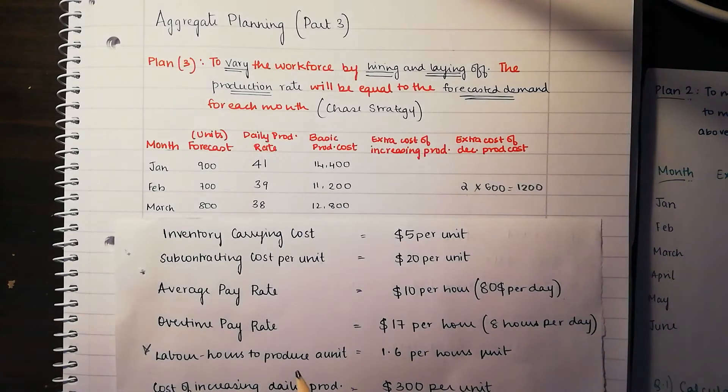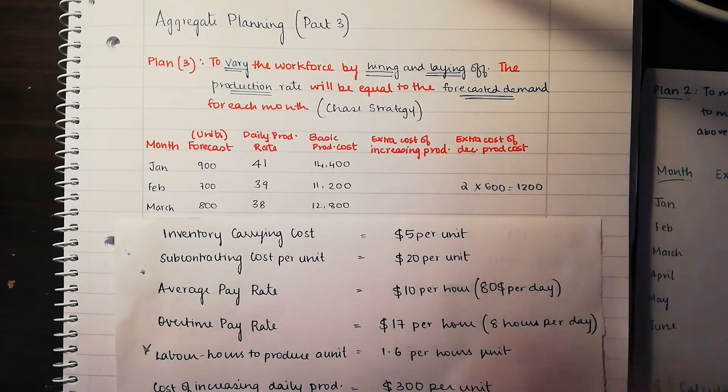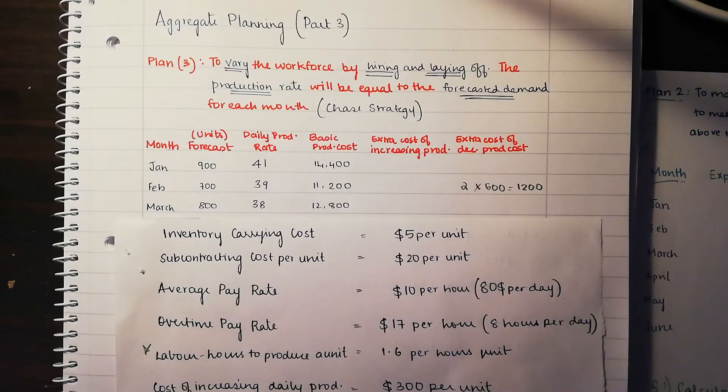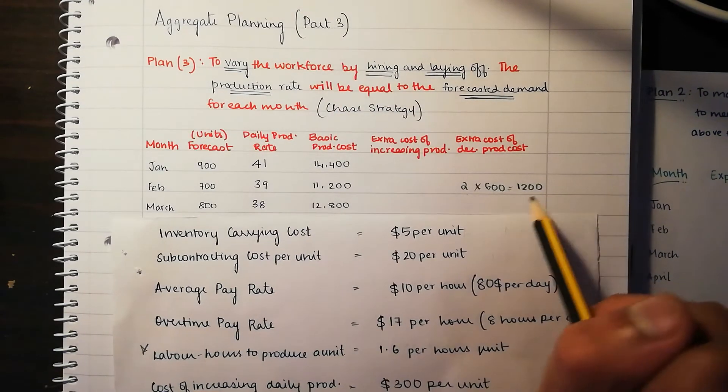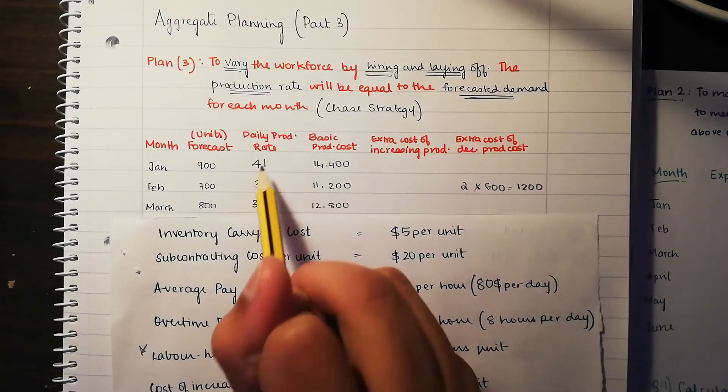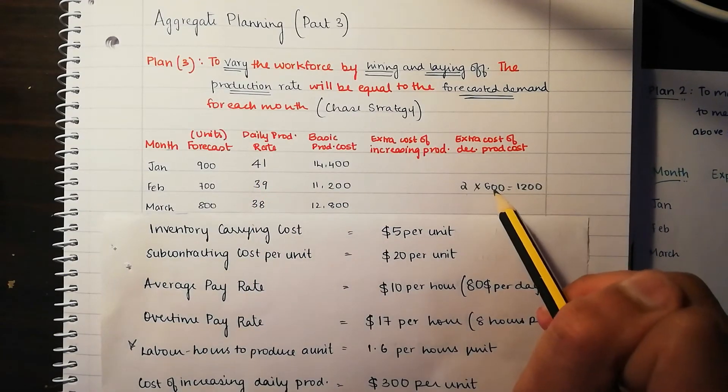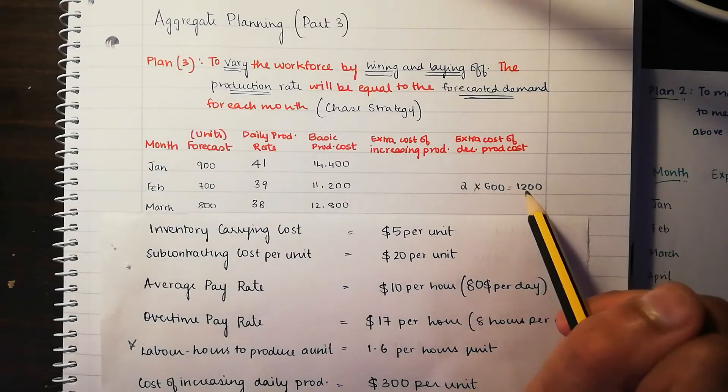The idea is that in Jan, we used to produce 41, but in Feb, we don't need 41, we need 39. So we're decreasing our production cost. We're not going to carry forth from Jan to Feb. We just need 39 in Feb and that's all we need. The rest, it's going to decrease our cost of production, the extra cost of production. That would probably mean to lay off workers or lay off part-time workers. So that whole cost of decreasing the daily production is going to be $600. Since we're decreasing it by 2 units, you multiply that by 2 and that's going to be $1,200.